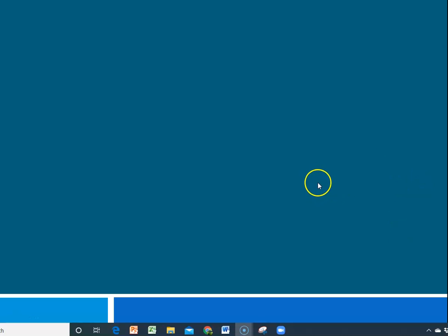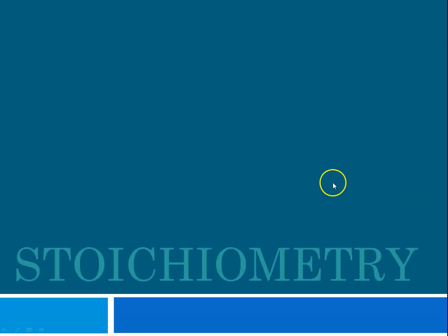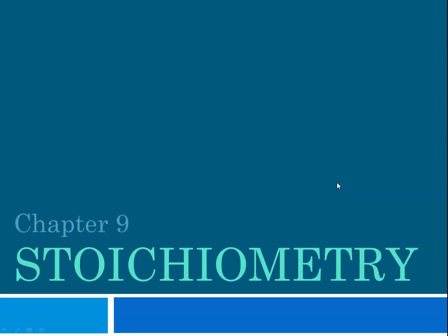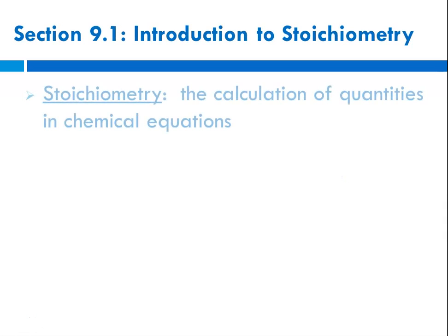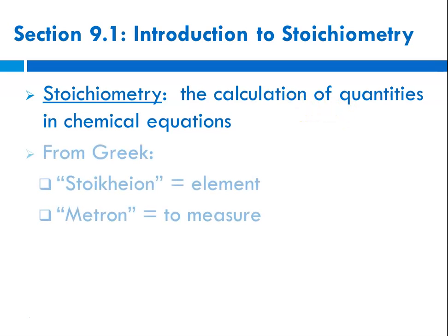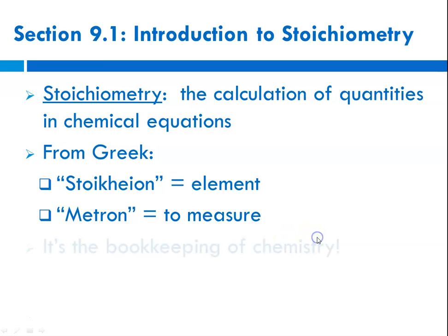Hello class, this is Ms. Augustine, and today we're going to be talking about chapter 9, which is stoichiometry. We always begin by defining it. Stoichiometry means the calculation of quantities in chemical equations or reactions, and it comes from two Greek words: stoikion, which means element, and metron, which means to measure. So we're literally measuring the elements — it's the bookkeeping for chemistry.